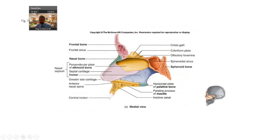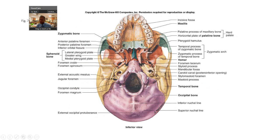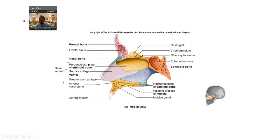I'm showing you this again so you can see the vomer. If you have an inferior view and you remove the mandible, embedded in the sphenoid bone you'll see the vomer, which you can sometimes see from a side view — a deep medial view.